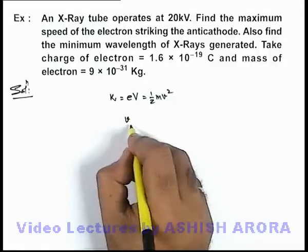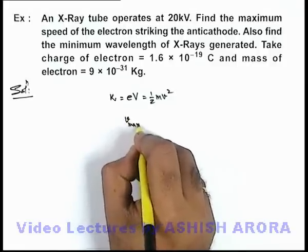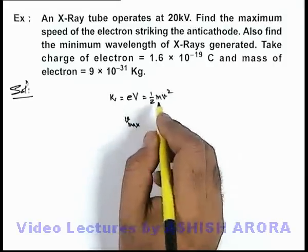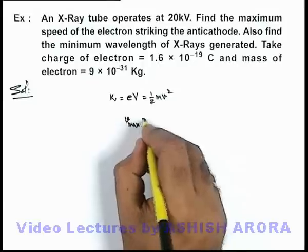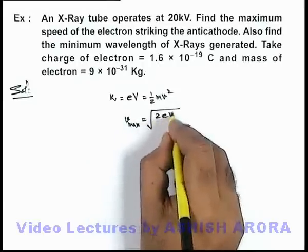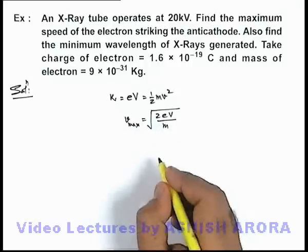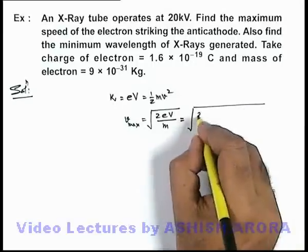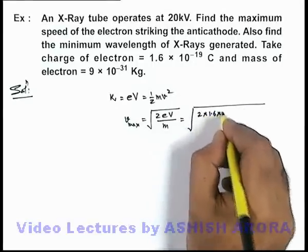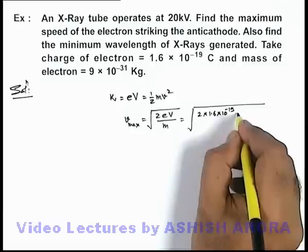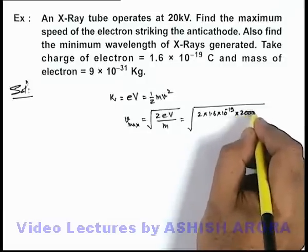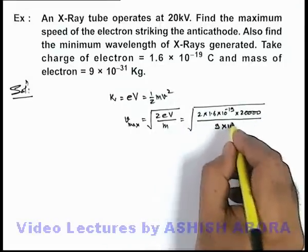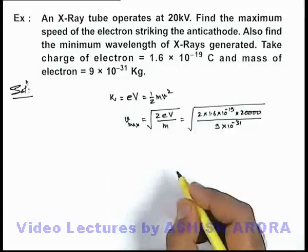Correspondingly, the maximum speed of the electron accelerated by 20 kilovolts can be given as √(2eV/m). If we substitute the values, this will be √(2 × 1.6 × 10⁻¹⁹ × 20,000) divided by the mass of electron, which is 9 × 10⁻³¹ kg.